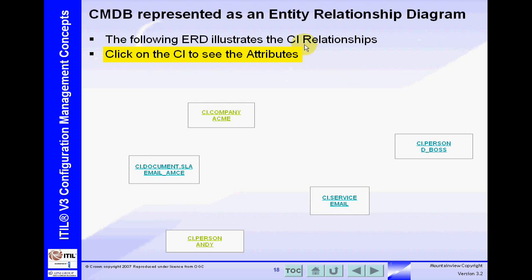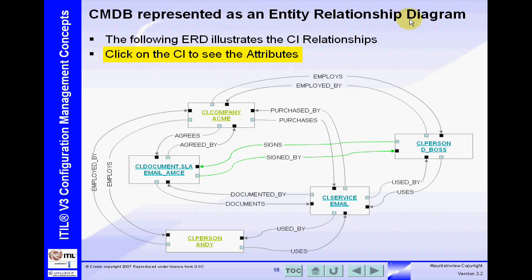We're going to represent the CMDB in the form of an entity relationship diagram. Those of you who have a database background will be very familiar with this. It's a way of representing records, or CIs — configuration items — within the CMDB. These records have relationships between each other, and those relationships should be bi-directional.